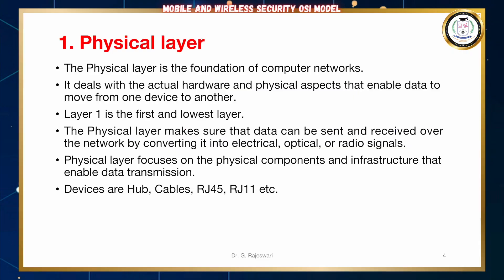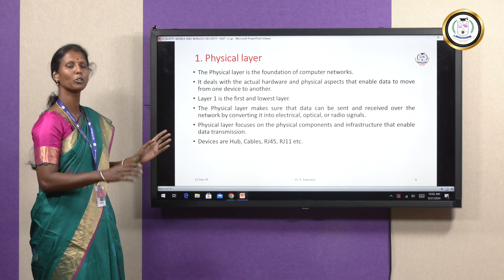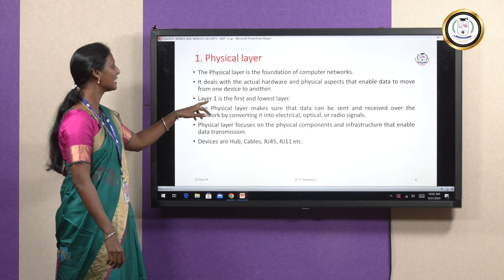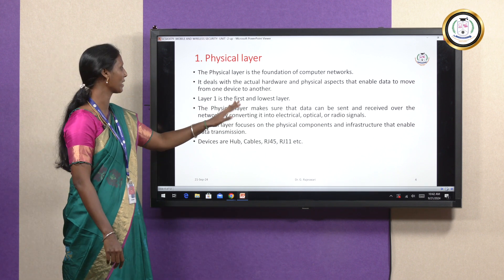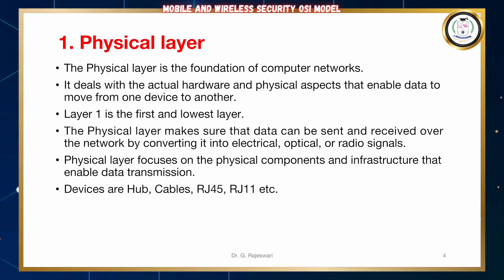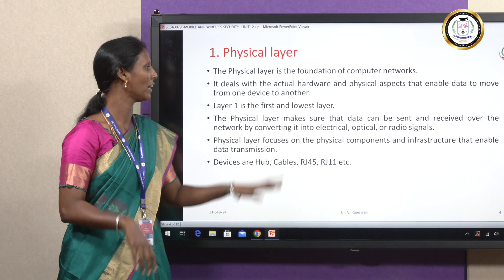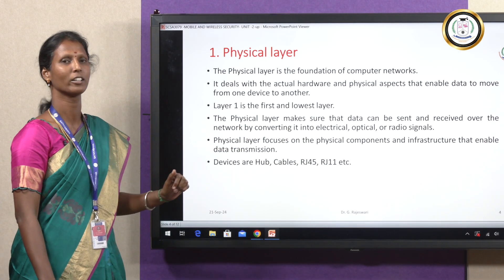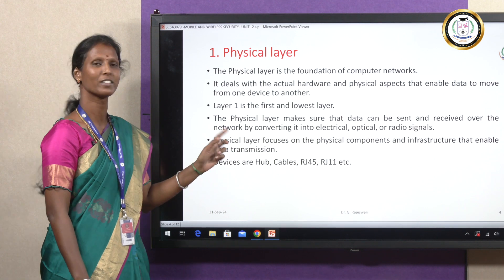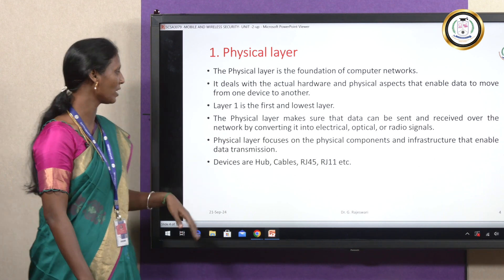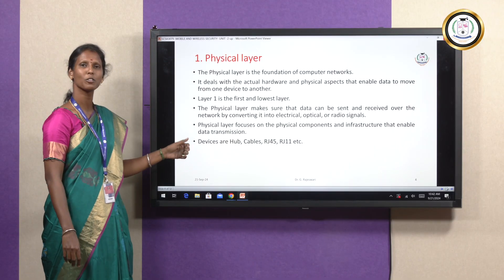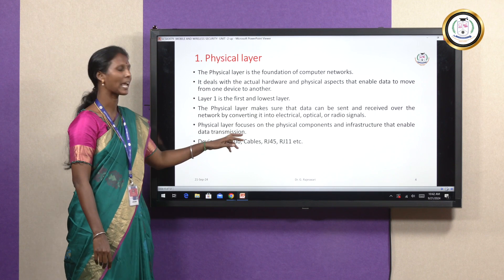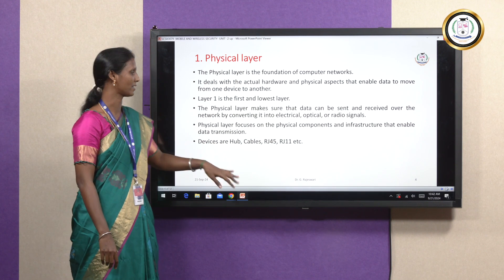The first layer is the Physical Layer. The physical layer is the foundation of computer networks. It deals with the actual hardware and physical aspects that enable data to move from one device to another. This layer one is the first and the lowest layer. The physical layer makes sure that data is sent and received over the network by converting it into either electrical signals, optical signals, or radio signals. Physical layer focuses on the physical components and infrastructure that enable data transmission. The devices used in the physical layer are hub, cables, RJ45, RJ11, etc.